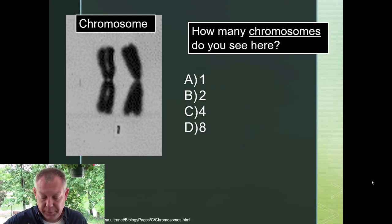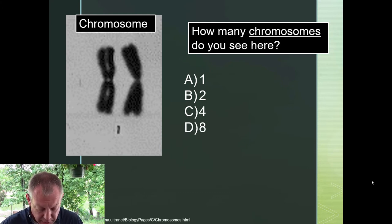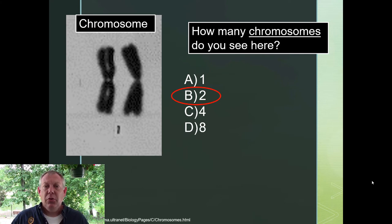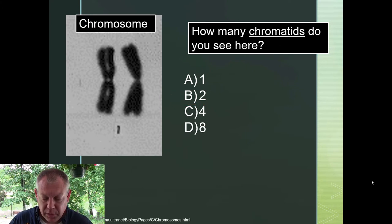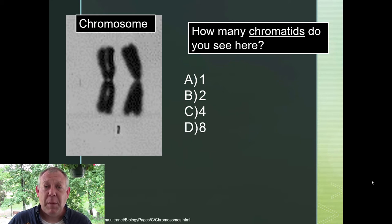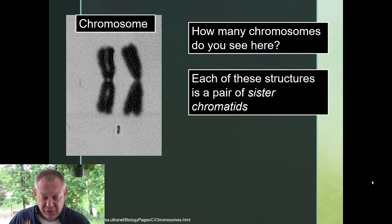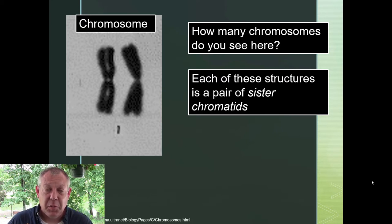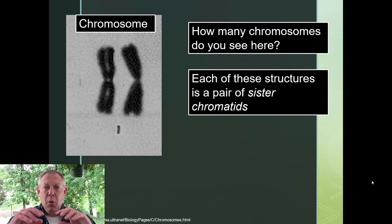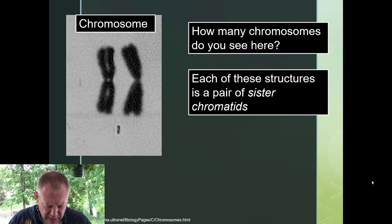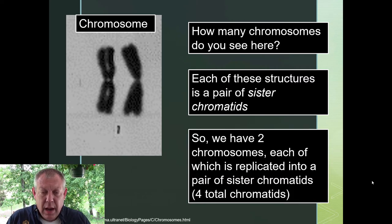How many chromosomes do you see here? We count centromeres, and there are two centromeres — so there are two chromosomes here. How many chromatids? Each of those chromosomes has been replicated and is a pair of sister chromatids, so there are four chromatids in this picture. Each one is a pair of sister chromatids — this is after S phase, when the chromosomes have been replicated. At some point we need to rip those sister chromatids apart like we did in mitosis, but we're not to that point yet.